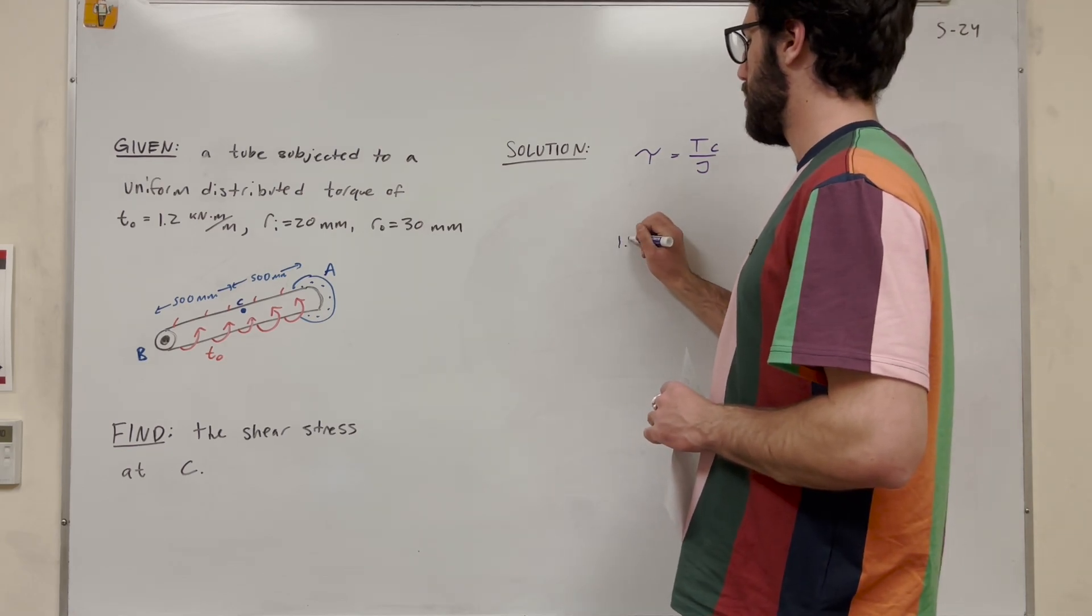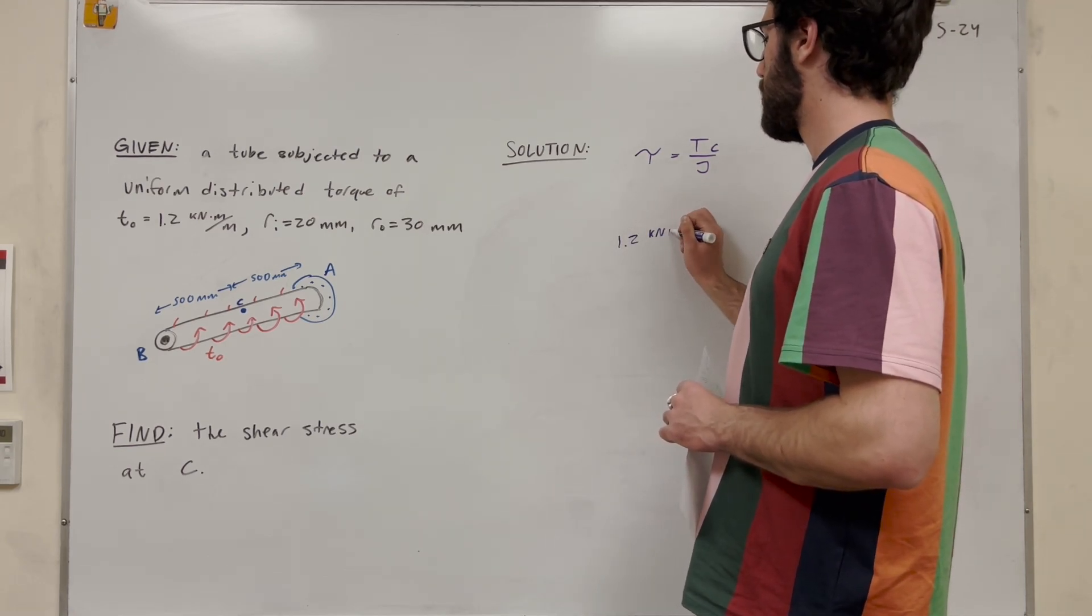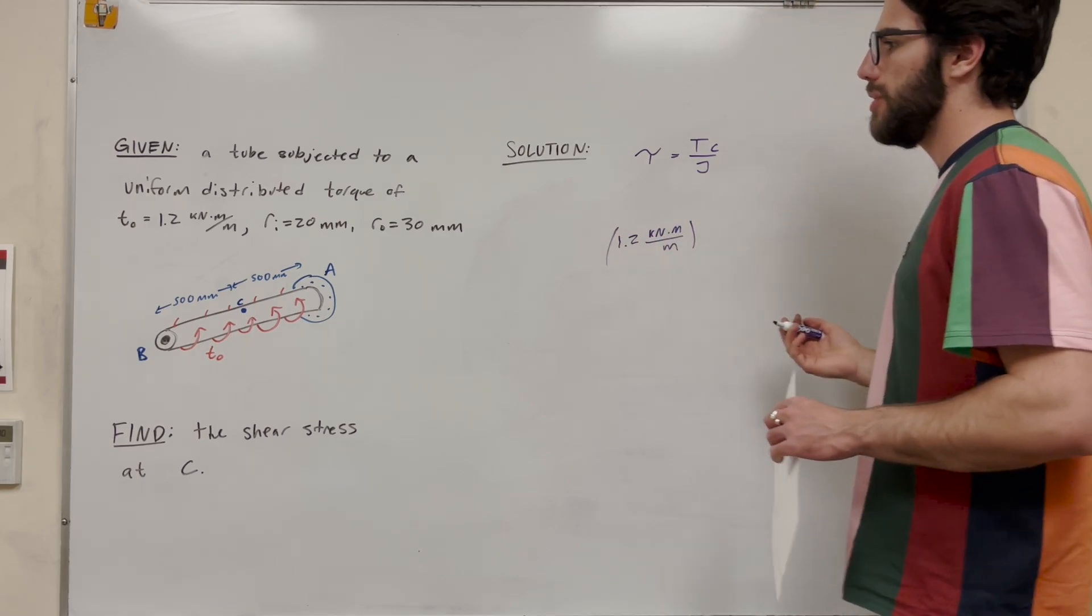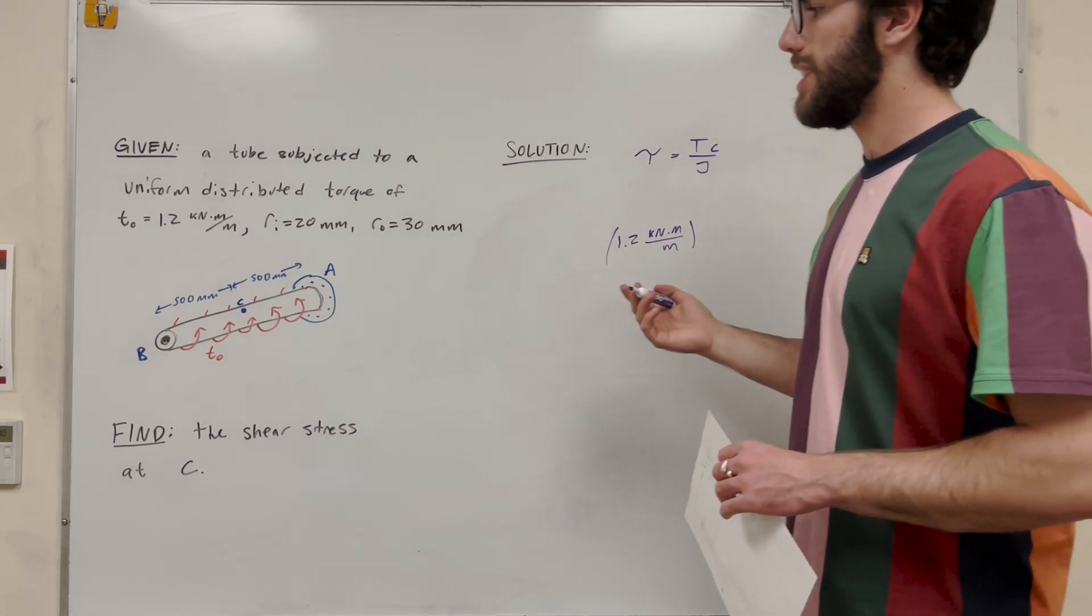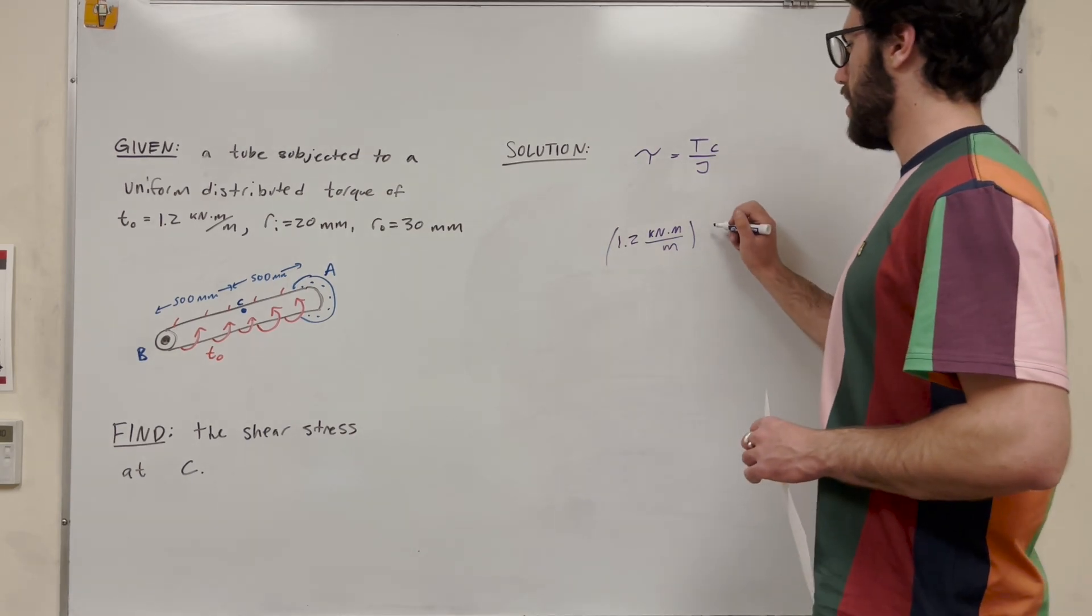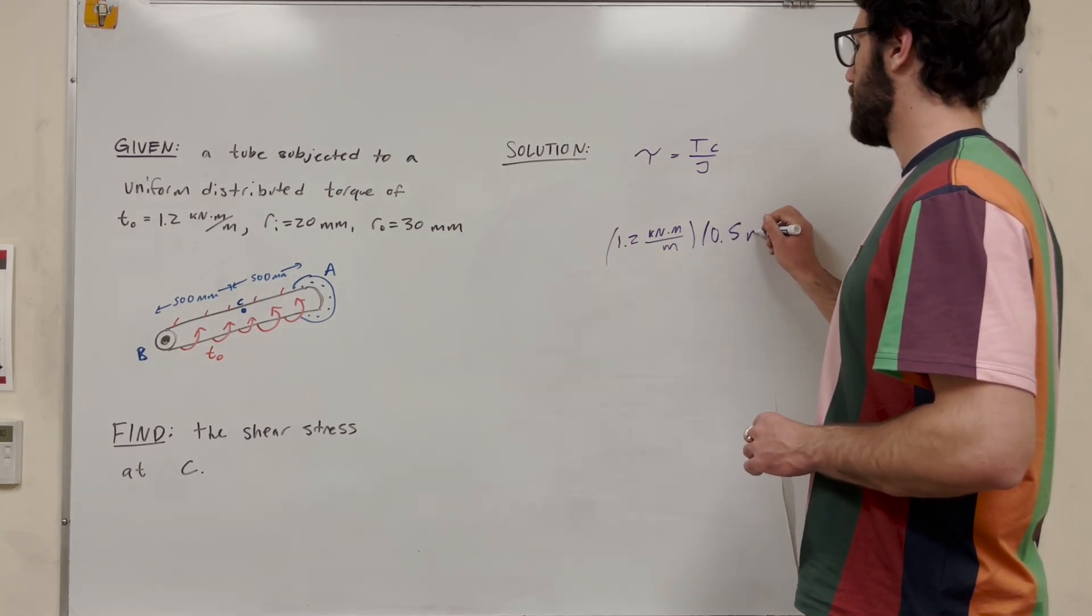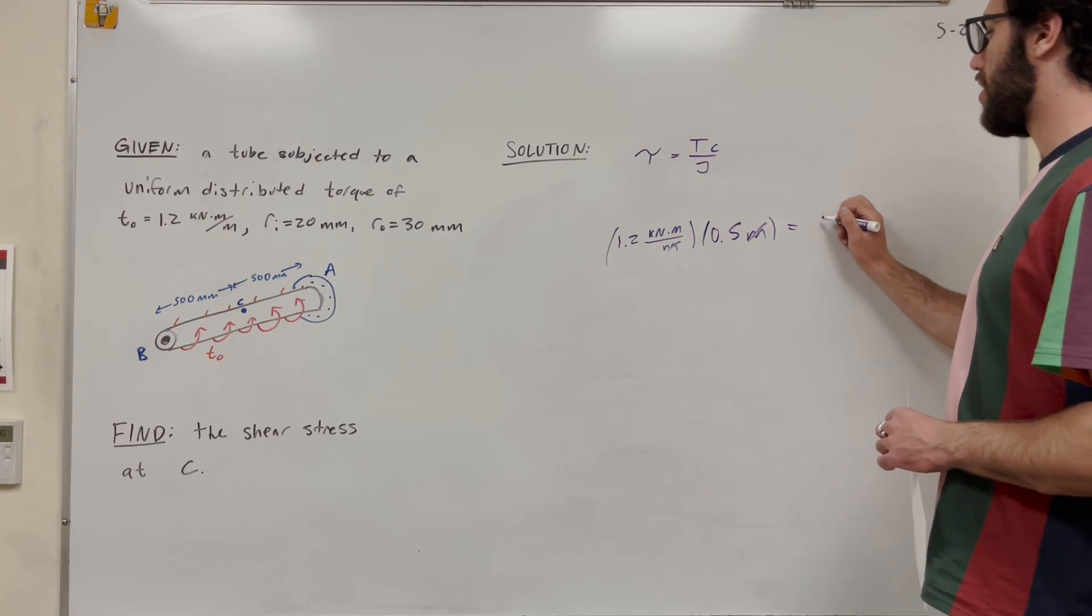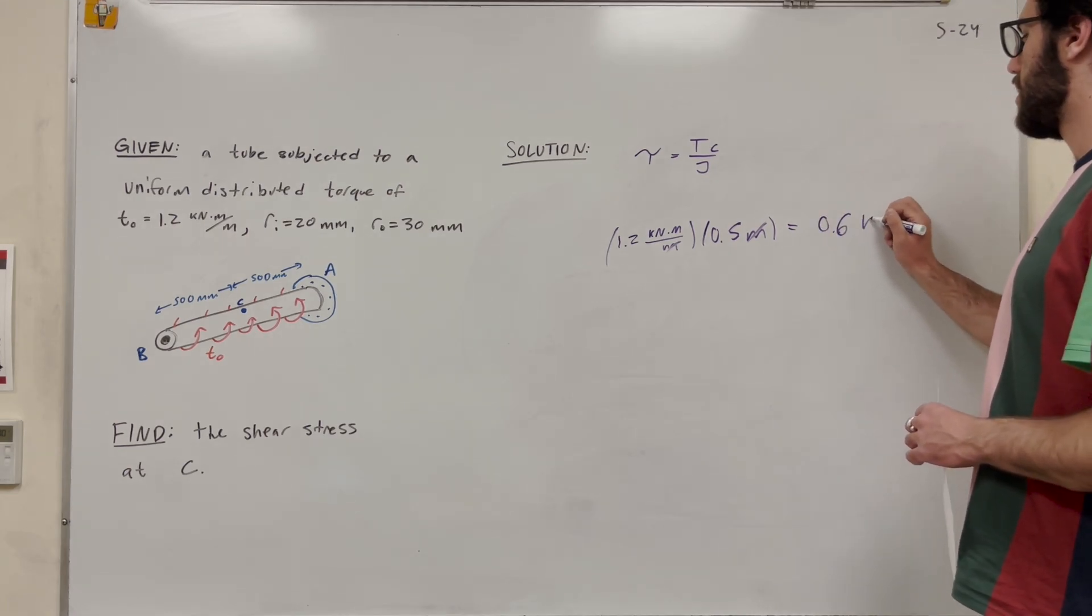So to do that, we're going to take 1.2 kilonewton meters per meter. And what we need to do is multiply it by the distance that it's acting. So from B to C, it's half a meter, so it's going to be times 0.5 meters. Now this meter and this meter are going to cancel. You want to get that our torque is equal to 0.6 kilonewton meters.